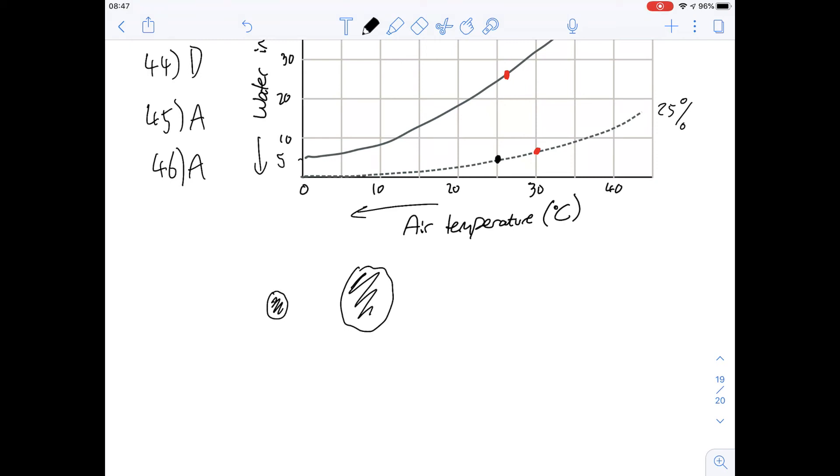Option C says nasal passages with a highly folded surface. Again this is going to increase the surface area and that's important for heat exchange to take place. It's the opposite of answer A.